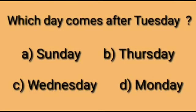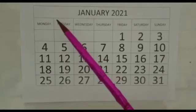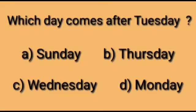Today's question is: which day comes after Tuesday? Option A: Sunday. Option B: Thursday. Option C: Wednesday. Option D: Monday. We can see in the calendar that the day after Tuesday is Wednesday, which is option C. So we will put a tick on option C.